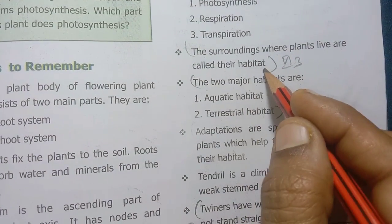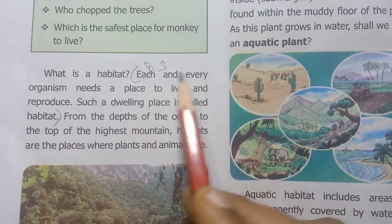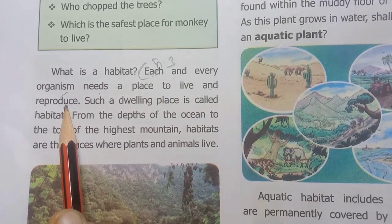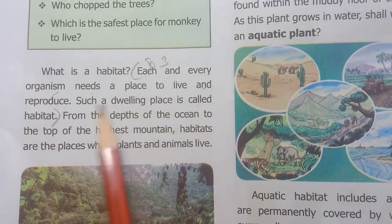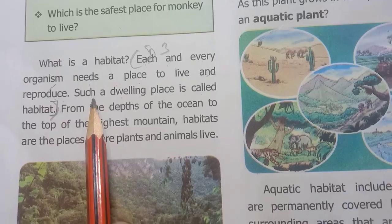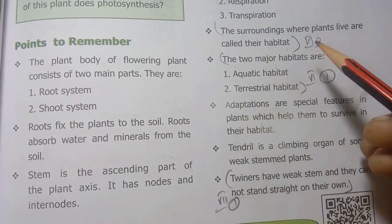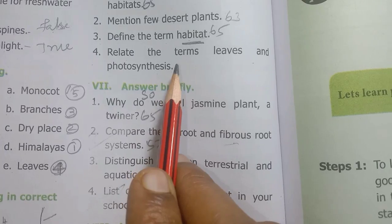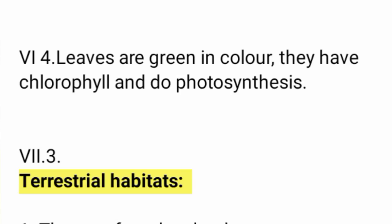Third: Define habitat. Each and every organism needs a place to live and reproduce — such a dwelling place is called habitat. Fourth: Relate the terms leaves and photosynthesis. Leaves are green in color, they have chlorophyll and do photosynthesis.